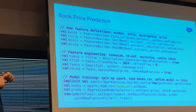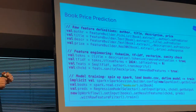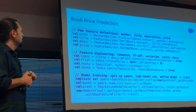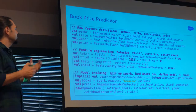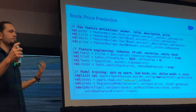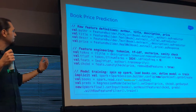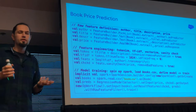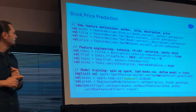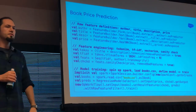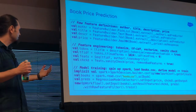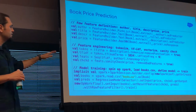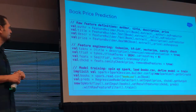I start by defining the features as the first block of code. Then I do some transformations — I'm squashing together title and description as regular variables, tokenizing to remove punctuation. Then I do TF-IDF, a well-known algorithm, to get some vector form. And then I run the transmogrify shortcut — I'll explain shortly what it means.